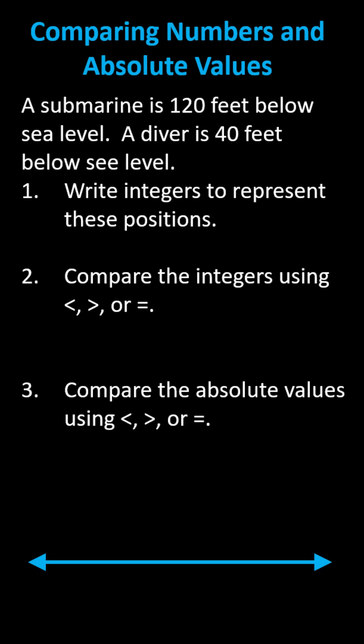A submarine is 120 feet below sea level, and a diver is 40 feet below sea level. Number one: use integers to represent these positions. Because both positions are below sea level, both integers are negative.